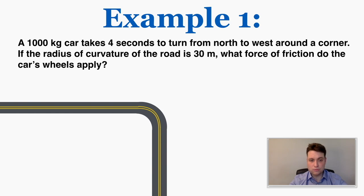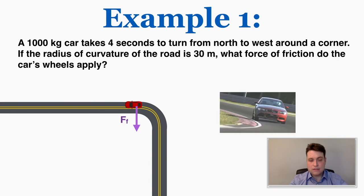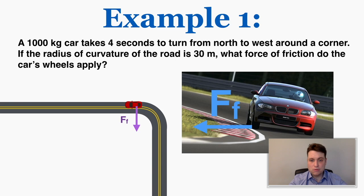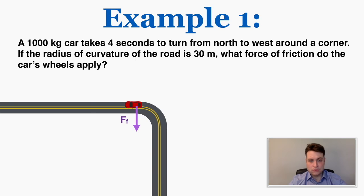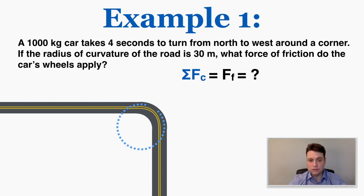We can imagine this car going around a circle, and the force taking the place of the centripetal force is friction — some horizontal force pointing toward the center of the car's circular path. The only horizontal force that can exist here is a push from the road itself, which makes sense because if the road is slippery with ice it's much more difficult to turn — your car just keeps going with whatever velocity it already has. The radius of curvature is 30 meters, meaning if this curve continued into a complete circle, that circle would have a radius of 30.